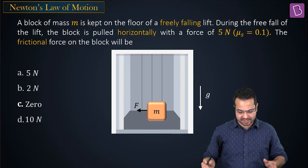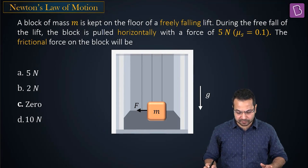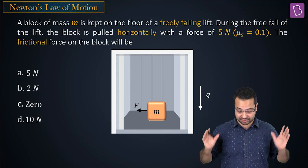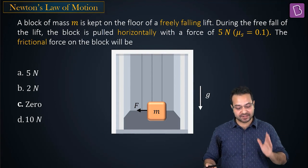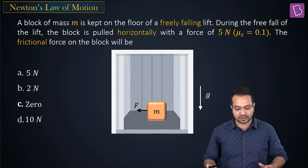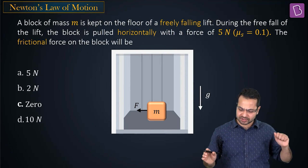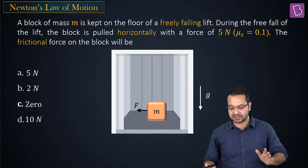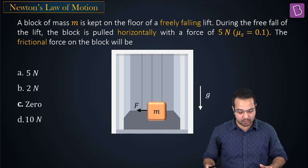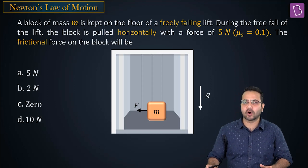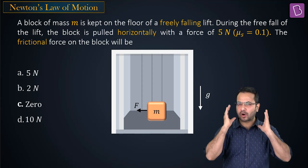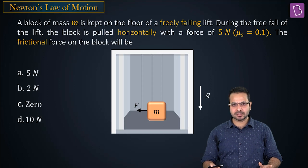A block of mass m is kept on the floor of a freely falling lift. During the free fall of the lift, the block is pulled horizontally with a force of 5 Newton. The coefficient of friction is given as 0.1. What is the frictional force on the block?